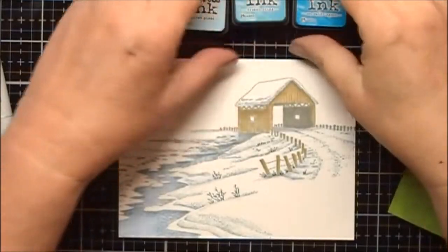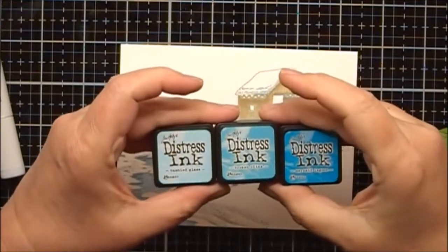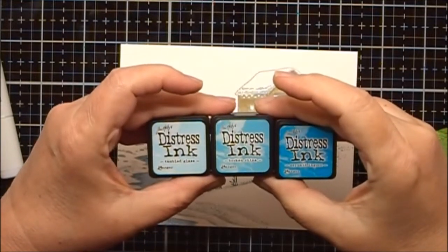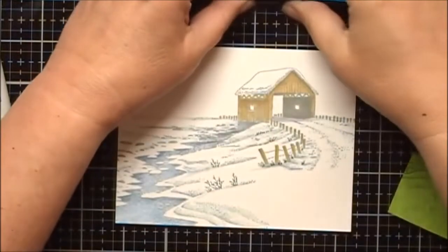Next I'm going to ink in some sky. I'm going to use some Distress Ink, Tumbled Glass, Broken China, and Mermaid Lagoon.